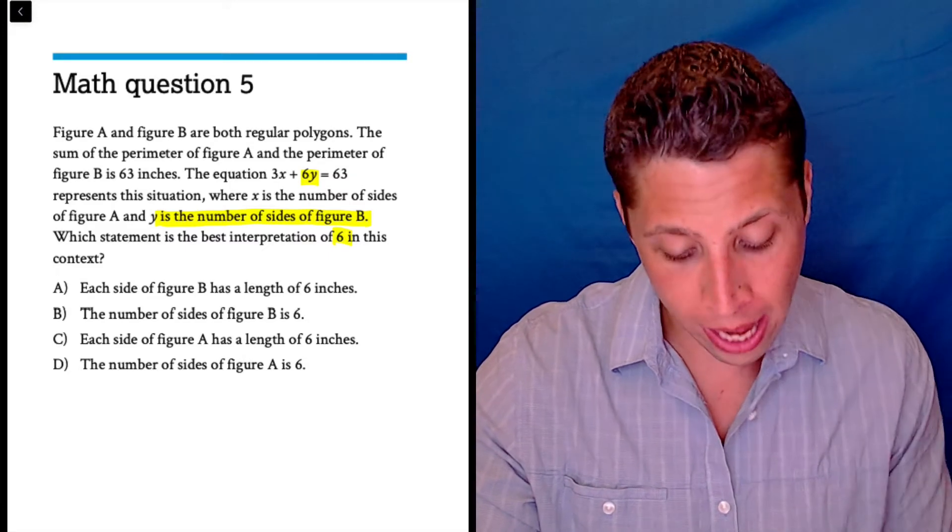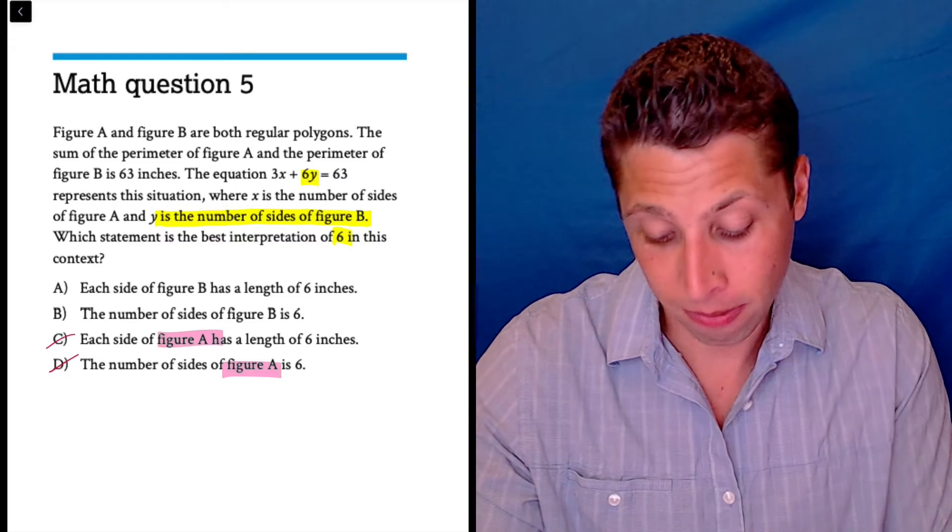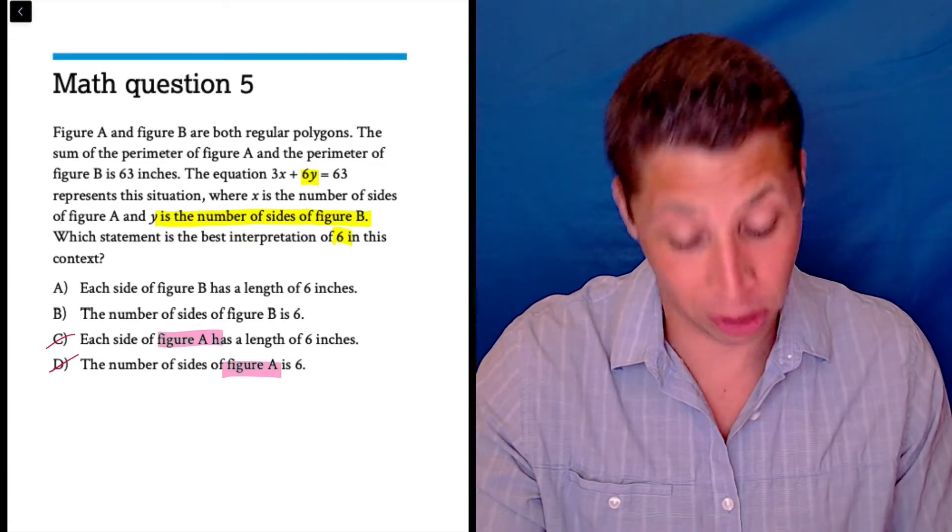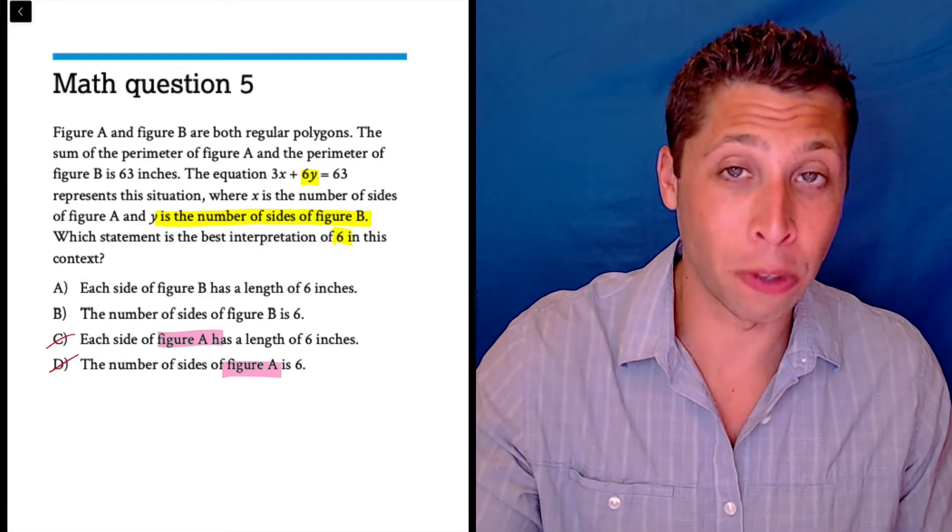Well, then what the heck is figure A doing in choices C and D? I don't know, shouldn't be there. We're talking about figure B, so that's probably it. So now we're down to a smaller set of choices to sort through.